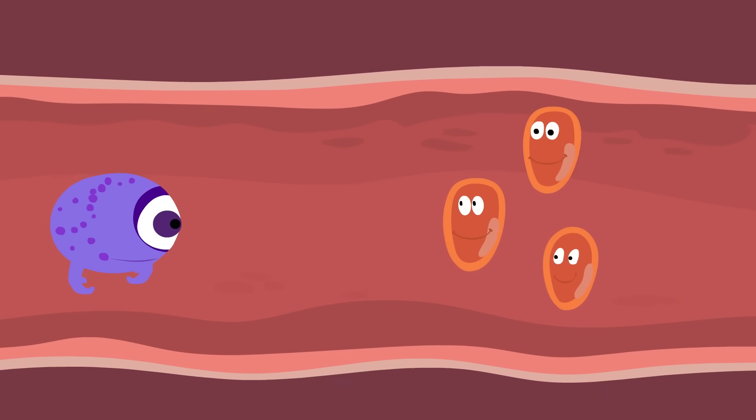The natural killer cells move around constantly, checking our cells for this type of deficiency. And when they find an abnormal cell, they simply bind to it, release chemicals, and destroy it.